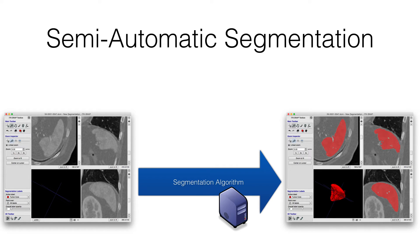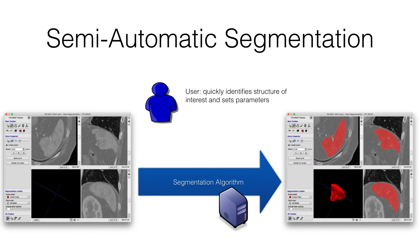We call it semi-automatic because unlike some tools where it's fully automated and you give it the image and out comes the segmentation, in Snap the user is part of this process. The user gives some quick guidance to the segmentation, using their prior knowledge and expertise to help tell Snap what to segment, and then the algorithm does the boring bits of actually filling in every voxel, and there can obviously be a lot of them.